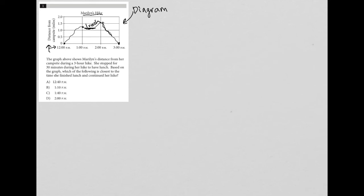Because I already took some time to pay attention to this diagram, I know that this flat, stagnant point in time ends about there. So in terms of time it's about here, which — if this is 1 p.m. and this is 2 p.m. — then this is about 1:30, halfway in. So this is about 1:45. The closest that I see to 1:45 is 1:40 p.m.